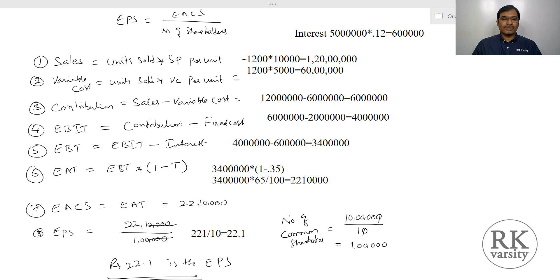In summary, the steps to calculate Earnings Per Share are: first calculate sales, then calculate variable cost, then contribution, then EBIT, then EBT, then Earnings After Tax, then Earnings Available to Common Shareholders, and finally calculate the EPS.